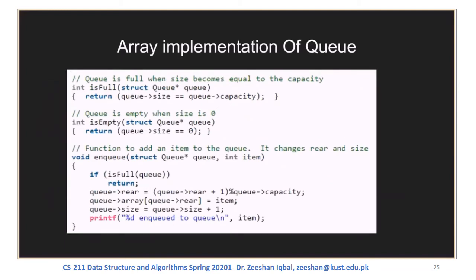Now let's look at two helper functions used in enqueue and dequeue. The function isFull checks if the queue is full by comparing size with capacity — if size equals capacity, the queue is full. The function isEmpty checks if the queue is empty by comparing size with zero — if size equals zero, the queue is empty; otherwise it is not.